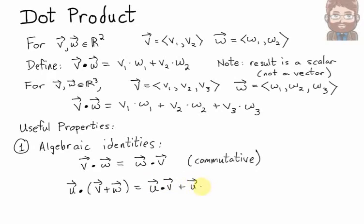If you take the vector U dot with a quantity V plus W, you could rewrite that as U dot V plus U dot W. In other words, the dot product is distributive over addition. You can break it up over addition like you would with normal multiplication.